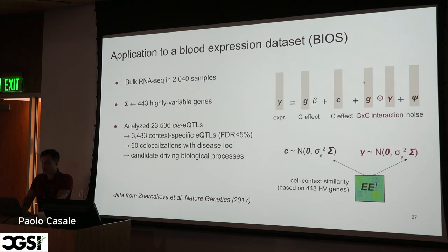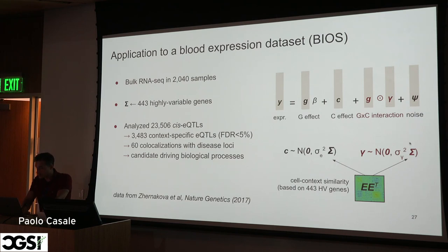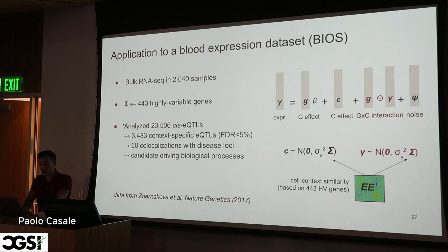We applied this to bulk RNA-seq data from BIOS — 2,040 samples — and built our exposure matrix using 443 highly variable genes in this dataset, using gene expression to build covariance matrices under the assumption that gene expression captures cell type composition for these samples. We focused our analysis on 23,000 eQTLs, identifying context-specific eQTLs at a 55% level for about 3,500 of them, with 60 co-localizing with disease loci. We then used the posterior over individual-level genetic effects to get insights on candidate driving biological processes.